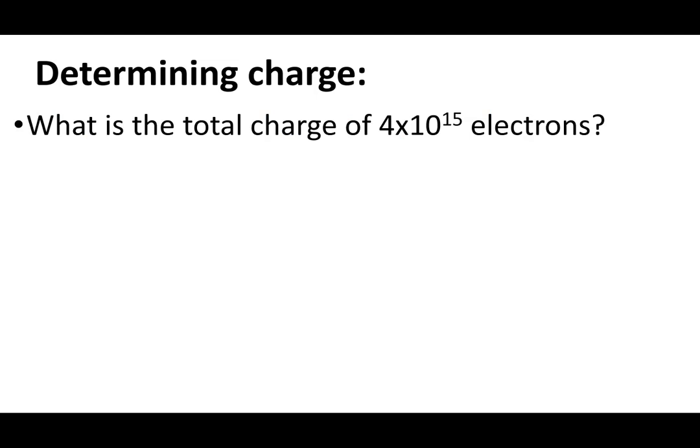So speaking of, how do we figure out the total charge and how do we figure out how many electrons or protons there are? This says, what is the total charge of 4 times 10 to the 15 electrons? Well, what we know is that one electron is negative 1.6 times 10 to the negative 19 coulombs. We have this many of them.